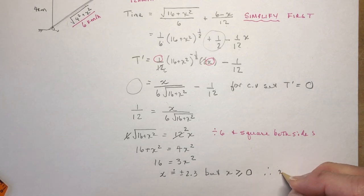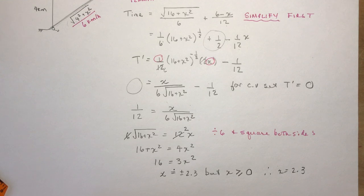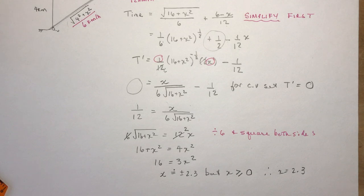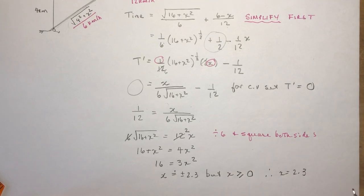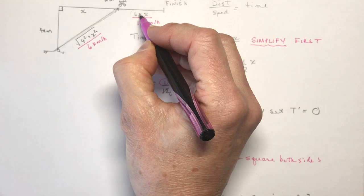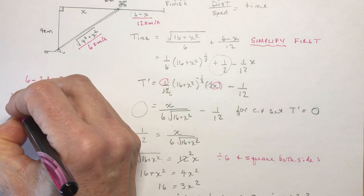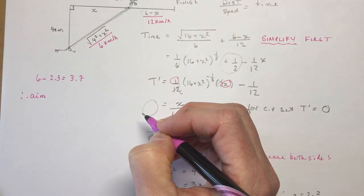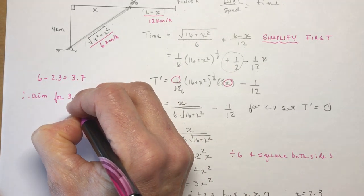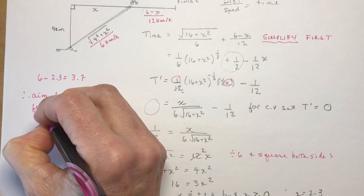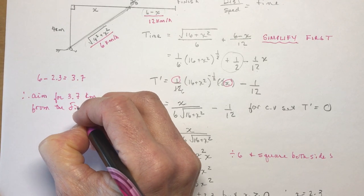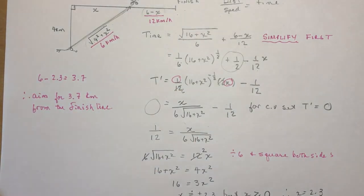Therefore x is equal to 2.3. Now that wouldn't be a very nice answer if the teacher asked you—the question says where, at what point on the shore should he aim to get from the starting point to the finish point? So the easiest is probably to take 6 minus 2.3 which is 3.7. Therefore aim for 3.7 kilometers from the finish line. There you go, there's your first question and you get your five or six points for doing that correctly. These are not hard, you've done a couple of them, you'll be off to the races.